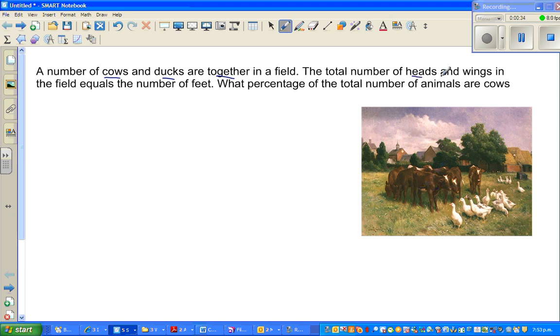The total number of heads and wings in the field equal to the number of feet. What percentage of the total number of animals are cows? So these are cows and ducks.